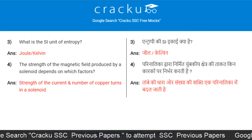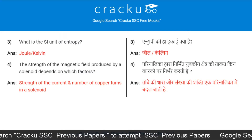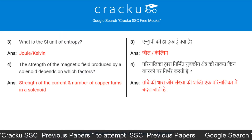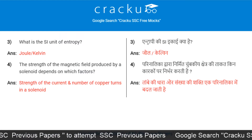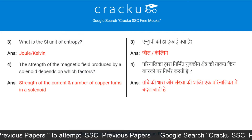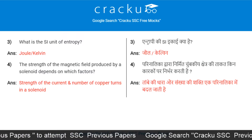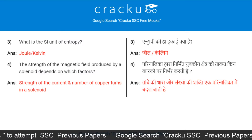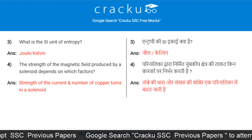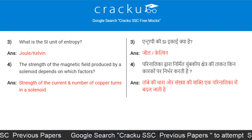The strength of the magnetic field produced by a solenoid depends on which factors? The strength of the current and the number of turns in the solenoid.